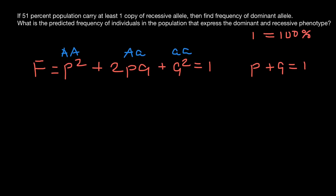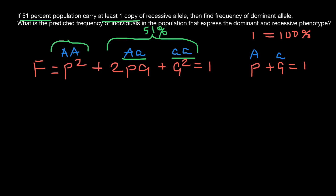In this formula, P stands for the dominant allele and Q stands for the recessive allele. We are told that 51% of the population carry at least one copy of the recessive allele. That means the heterozygous genotype and the homozygous recessive genotype together make 51%, because both carry at least one copy of the recessive allele.